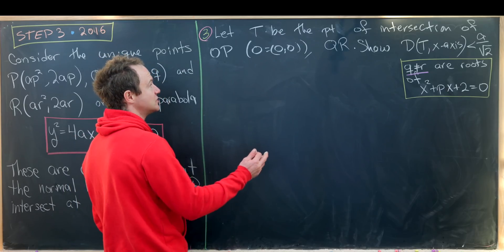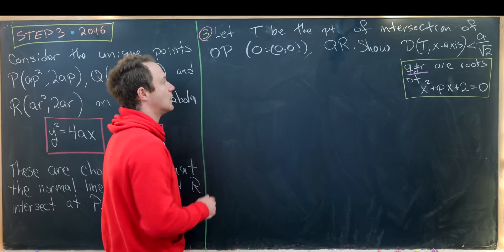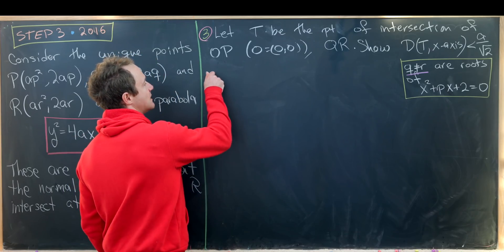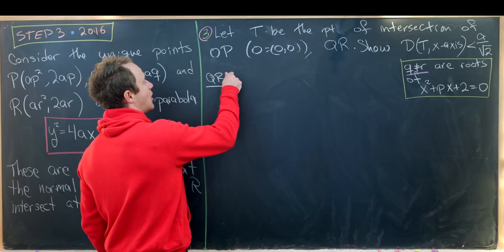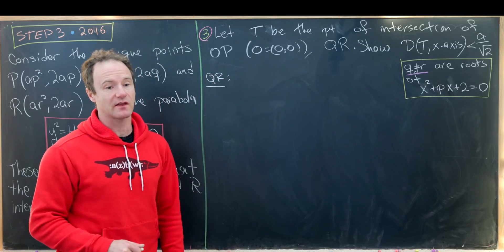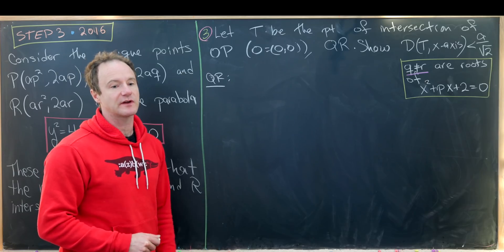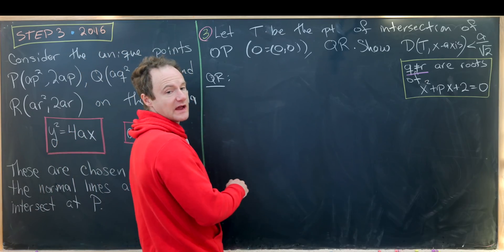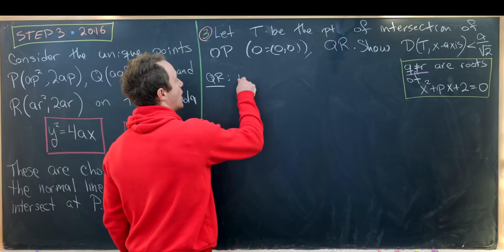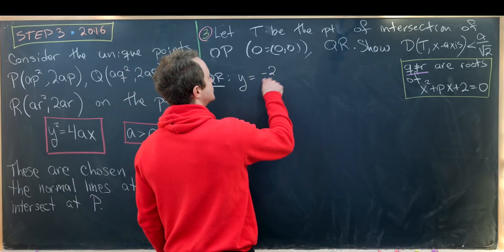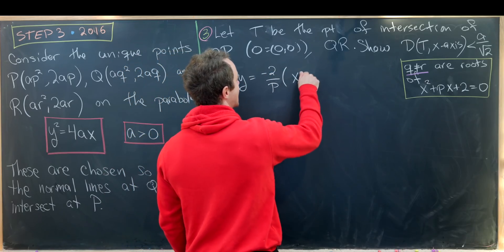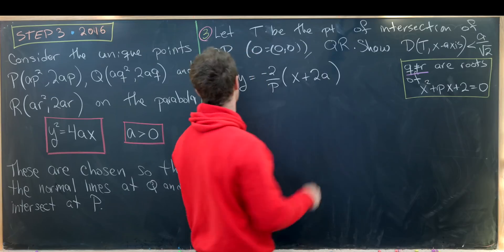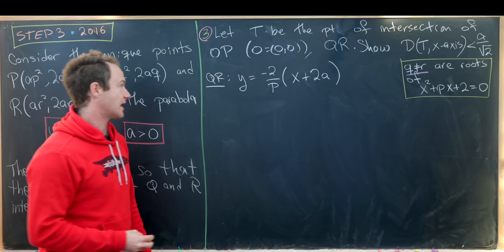So let's see how we can do that. We'll get equations for OP and QR. So maybe have an equation for QR first which we actually had on the last board. So I'll just bring that up from the last board.